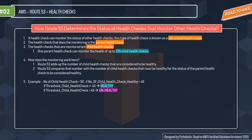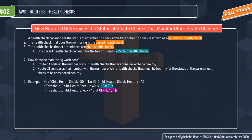Here's how the monitoring works: Route 53 adds up the number of child health checks that are considered healthy, then compares that number against a threshold — the number of child health checks that must be healthy for the parent to be considered healthy. For example, suppose the total number of child health checks is 50 and the number currently healthy is 40. If the threshold is less than or equal to 40, the parent is considered healthy. If the threshold is greater than 40, the parent is considered unhealthy.